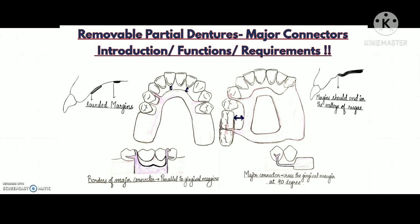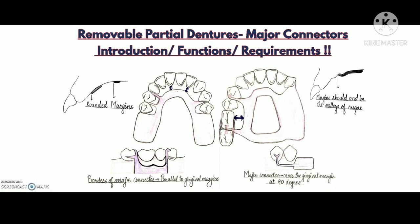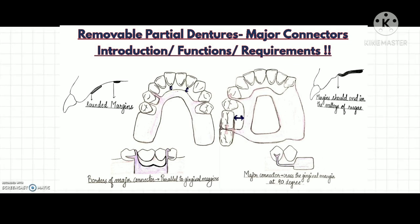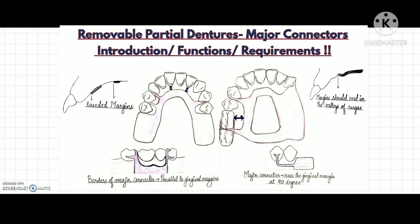Today's topic is about removable partial dentures — basically an introduction about the major connectors. As we already know, the success of a removable partial denture mainly depends on proper design and component selection, which is possible only if we have a good understanding about all the components of a removable partial denture.